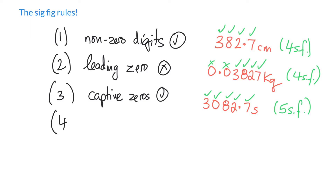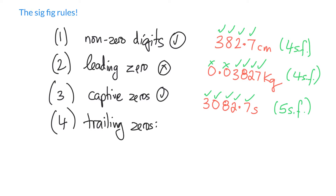The last place a zero can be is at the end of a number. If there is a trailing zero, sometimes it counts and sometimes it doesn't. Trailing zeros — zeros to the right of a number — count if there is a decimal point. I'll write DP for decimal point. Otherwise, if there's no decimal point, we ignore them.